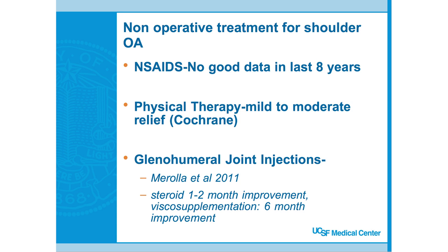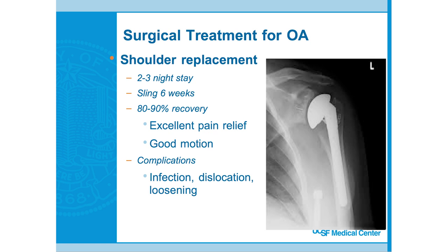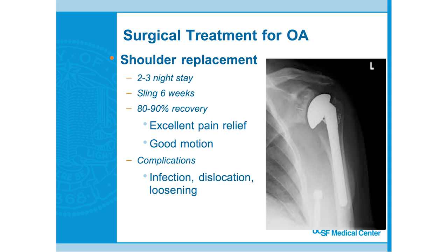If patients fail non-operative treatment and still have a lot of discomfort and restricted range of motion, a shoulder replacement provides good results — good pain control and good motion. There are different types: if someone doesn't have an intact rotator cuff, you may have heard of a reverse shoulder replacement. There are complications with any surgery, but shoulder replacement does give patients good results.